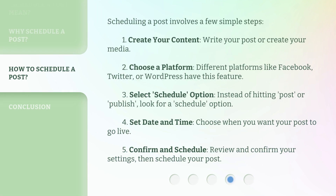Scheduling a post involves a few simple steps. 1. Create your content: write your post or create your media. 2. Choose a platform: different platforms like Facebook, Twitter, or WordPress have this feature. 3. Select the Schedule option: instead of hitting 'Post' or 'Publish,' look for a 'Schedule' option. 4. Set date and time: choose when you want your post to go live. 5. Confirm and Schedule: review and confirm your settings, then schedule your post.